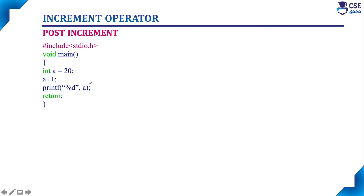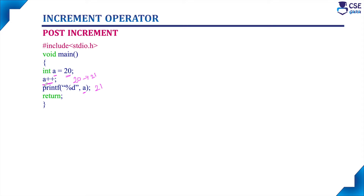Next, consider this example for post-increment. We have declared a variable a as an integer variable and the value 20 is assigned to this integer variable. So now the value of a is 20. Here we are simply implementing an increment operation — this is a post-increment. The operand is used first and then the operator is placed. Since the value of a is 20 and it gets incremented, we will get 21. The next statement asks to print the value of a, so it will print 21.